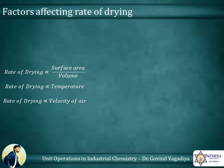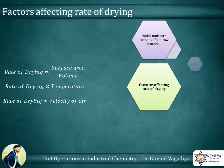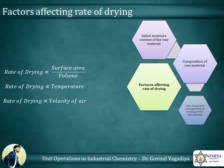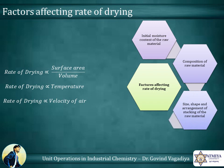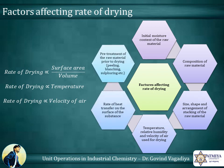Other factors affecting drying are: initial moisture content of the raw material, composition of raw material, size, shape, and arrangement of stacking of the raw material, temperature, relative humidity and velocity of air used for drying, rate of heat transfer on the surface of the substance, and pre-treatment of the raw material prior to drying such as peeling, blanching, and sulfuring.